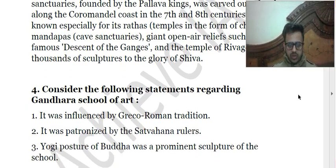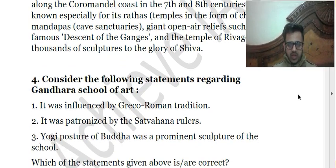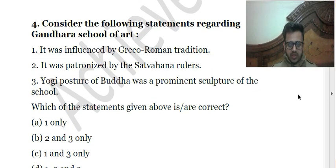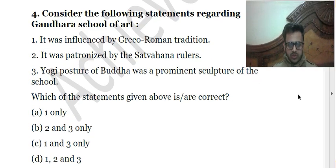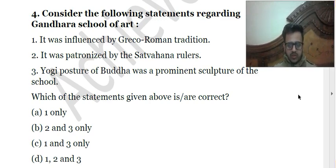Fourth question: consider the following statements regarding the Gandhara school of art. First: it was influenced by the Greco-Roman tradition. Second: it was patronized by Satavahana rulers. Third: the yogic posture of Buddha was a prominent sculpture of the school. Gandhara school of art was located at a strategic location, so it had the influence of Persian art and Greco-Roman traditions.